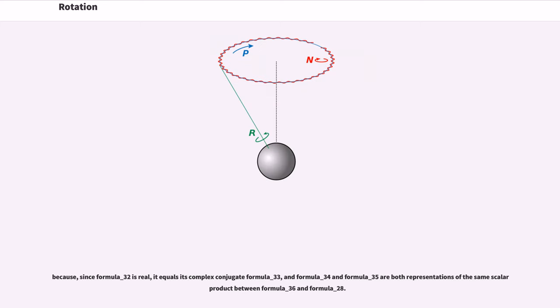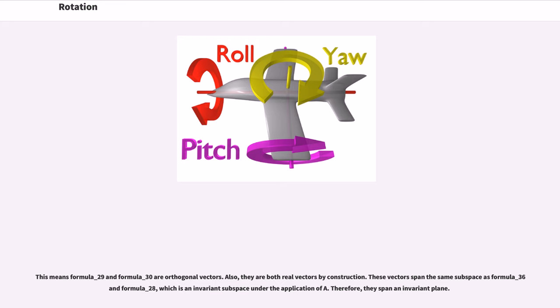Because the scalar product is real, it equals its complex conjugate, and both are representations of the same scalar product. This means the real and imaginary parts are orthogonal vectors. Also, they are both real vectors by construction. These vectors span the same subspace as the original eigenvector and its conjugate, which is an invariant subspace under the application of A.